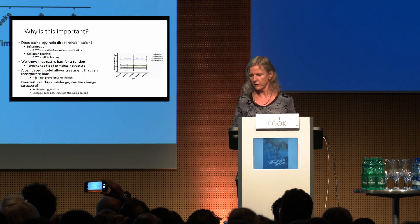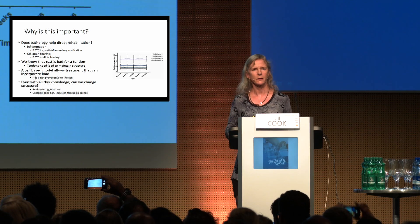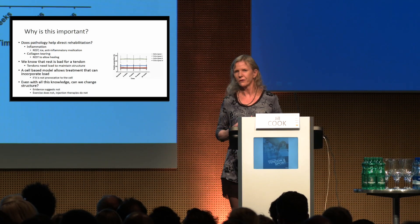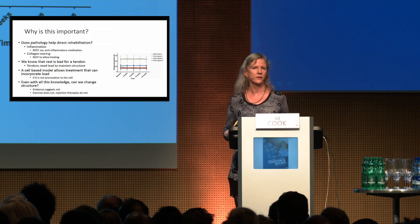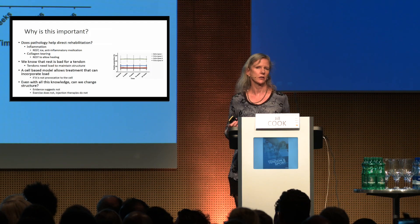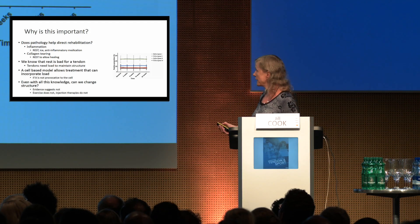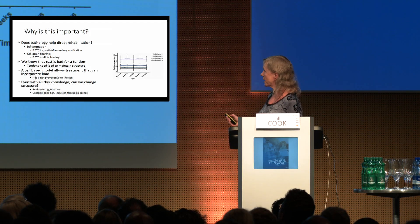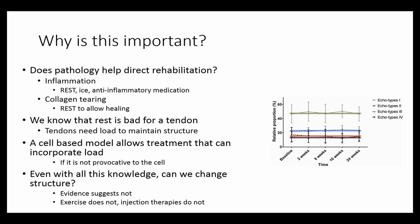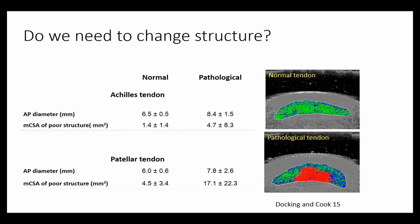Even with all this knowledge, can we change pathology once it's developed? It doesn't appear that once we have a degenerative pathology we can actually change it. A 24-week program of exercise shows the structure does not change. These people get better, they become more functional, they lose their pain — but the structure doesn't change. So it appears that almost nothing we do will change structure. That leads us to the question: do we need to change structure?